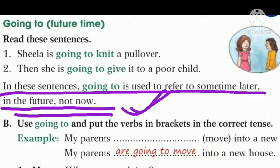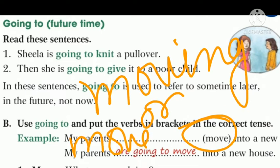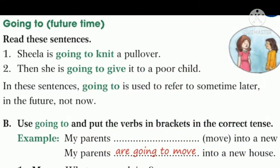Let's do a practice with an exercise given in your textbook. Exercise B — let's read the instructions first. Use GOING TO and put the verb in brackets in the correct tense. You have to keep in mind that there is no change in the form of verb. It means there is no need to use the ING form of verb, and there is no need to use the second form of verb as we have done in the past tense. So no need to put an ING with the verb, and do not change the base form of verb. You can use the same base form of verb in the sentences.